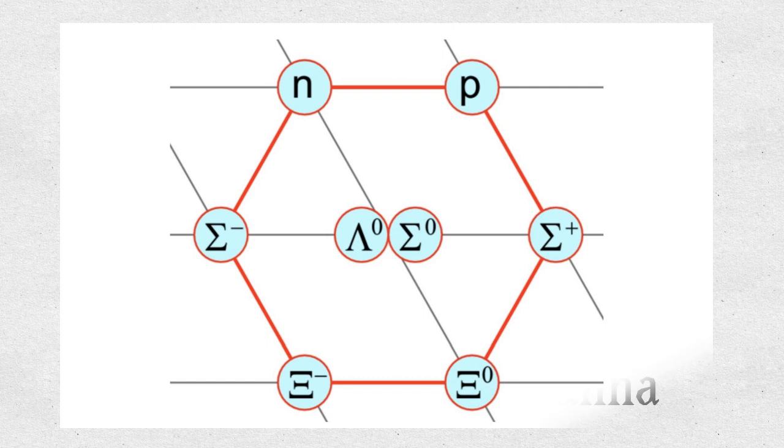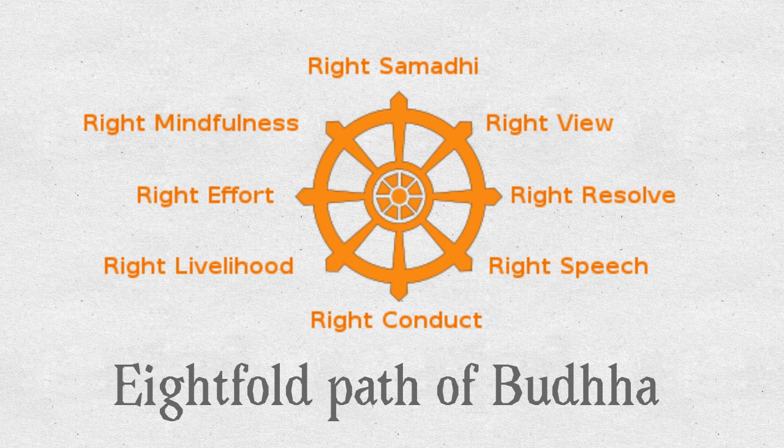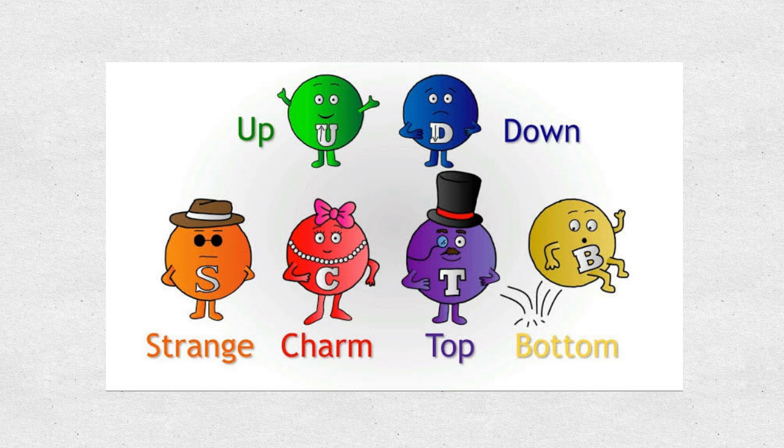Some would mention a mysterious idea of Gell-Mann called the Eightfold Way, referencing the Noble Eightfold Path of Buddha. So I'll give you a glimpse of how these particles are classified.